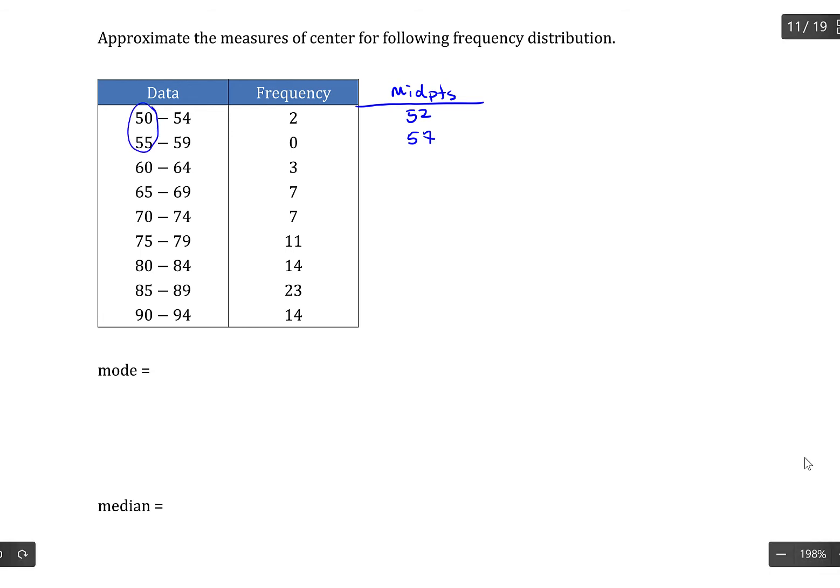The difference between any two consecutive lower class limits or upper class limits is also 5. So that's what's known as the class width of the distribution. So you can get the first midpoint and then just repeatedly add the class width to get the rest of the midpoints.